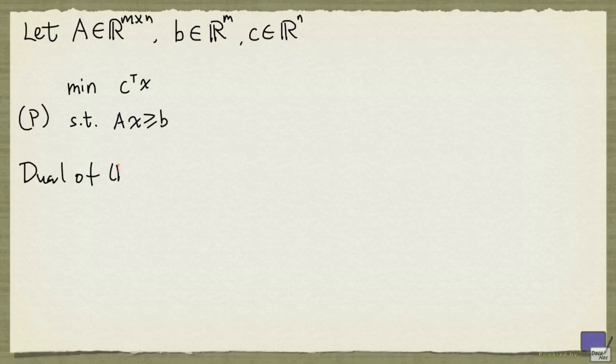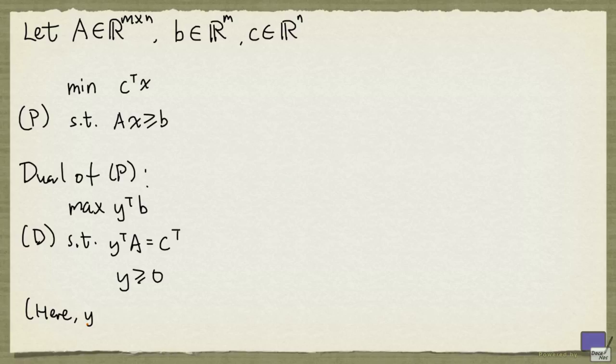Then the dual problem of P is the following linear programming problem. Here, Y is an m-tuple of variables. The problem P is called the primal problem.